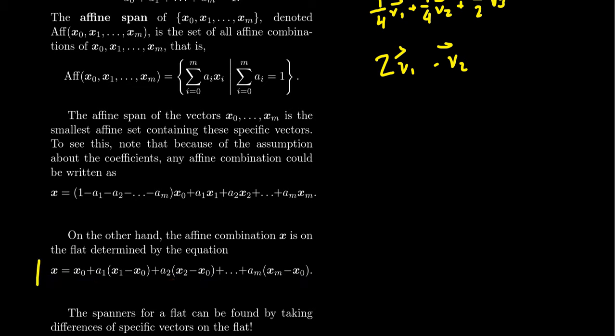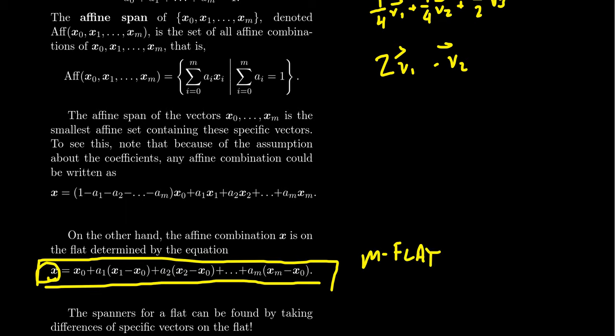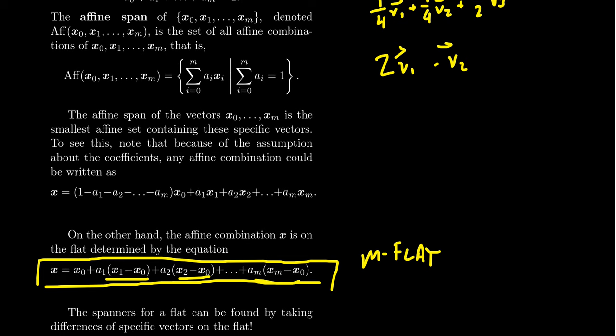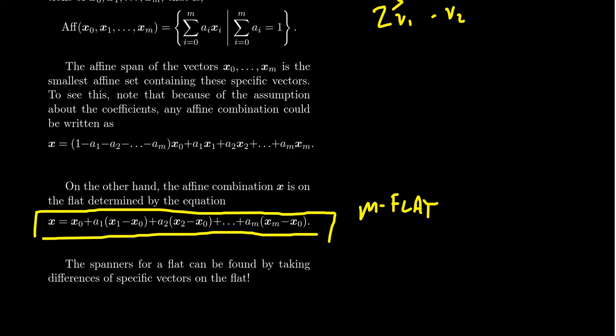So this second equation right here, if we ignore the assumption on the coefficients, this right here looks like the equation of an m-flat, right? We have the general vector x is equal to a particular vector plus a linear combination of all these other vectors right here. And so, for the general flat, we don't require that the coefficients have to add to be 1. We could relax that condition. But notice that this equation is the equation of an m-flat, and this m-flat will contain each and every one of those vectors.